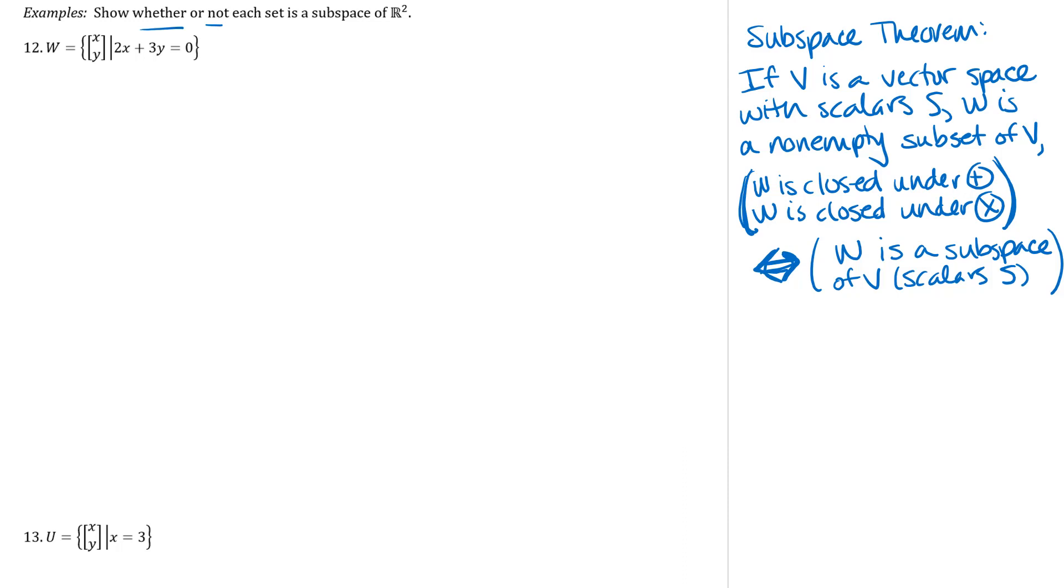So of these two examples, these are the two examples from our class notes. Hopefully you figured out that number 13 is actually the easier one because this one is not a subspace of R². Actually both closure properties fail. The condition here is that the first component of the vector has to be 3.